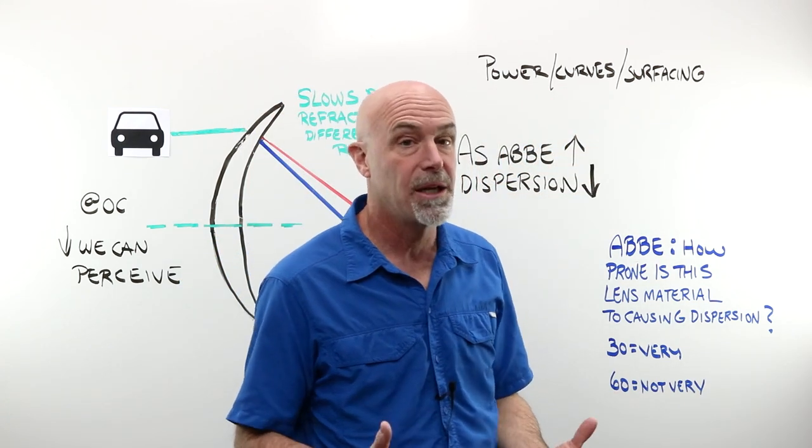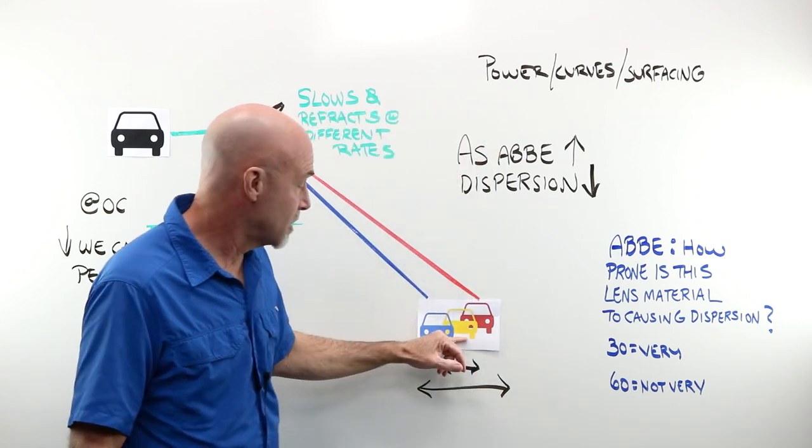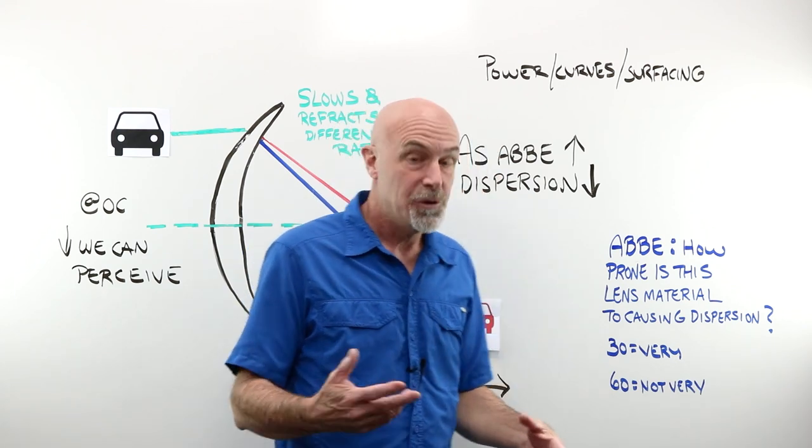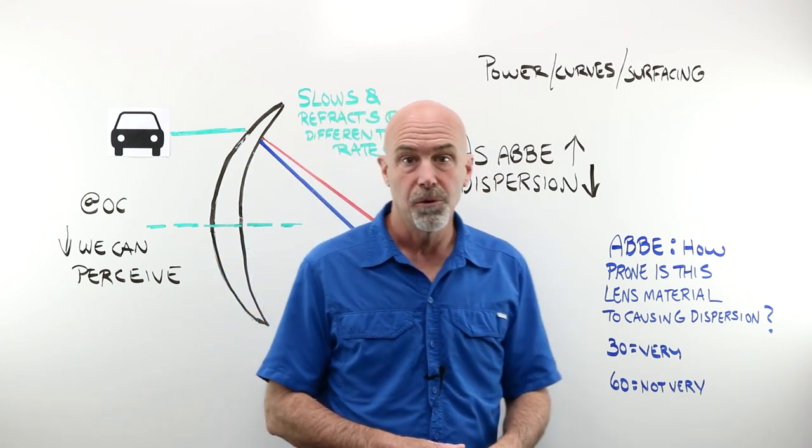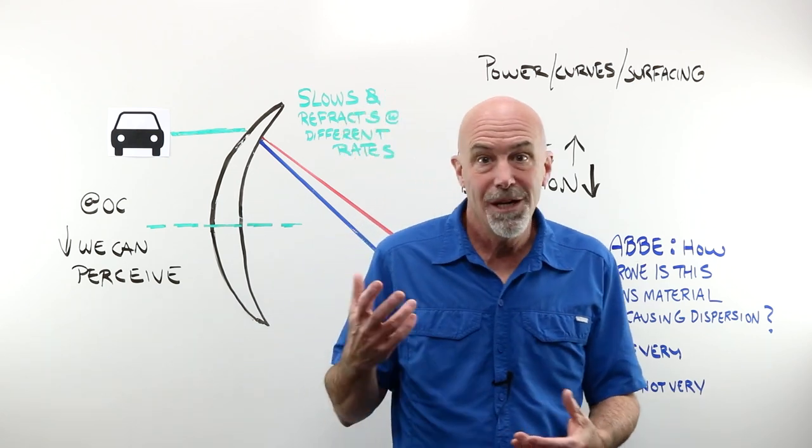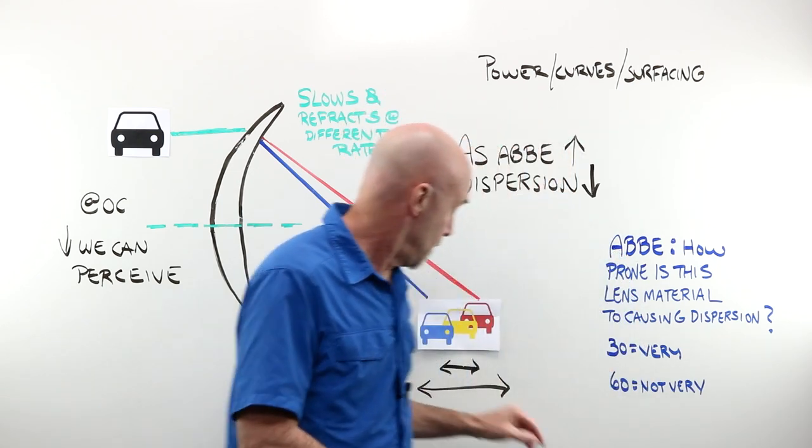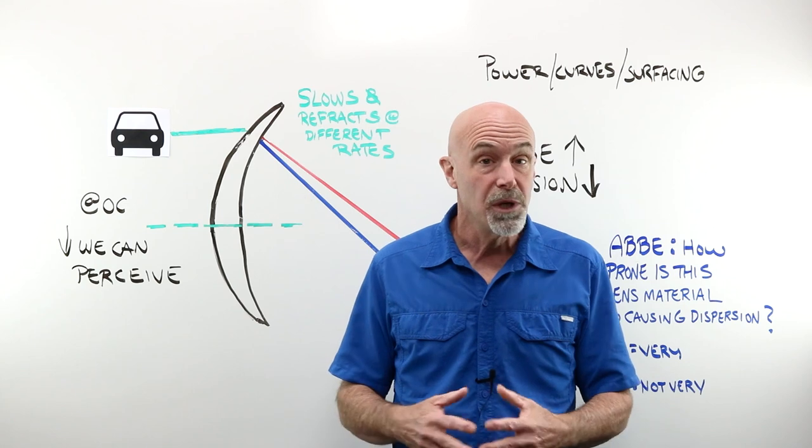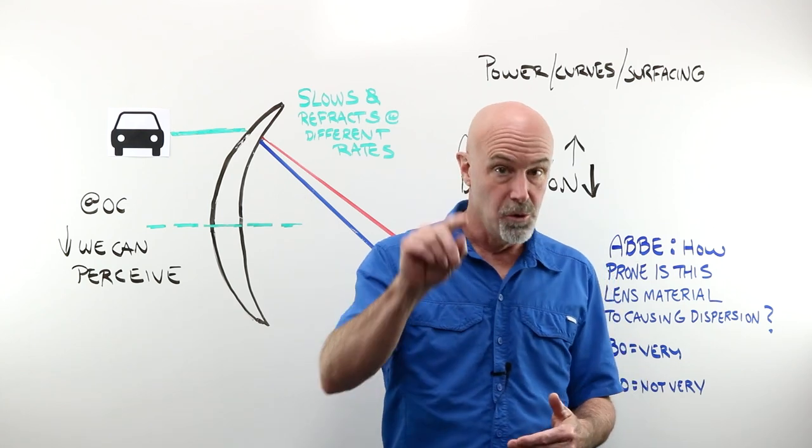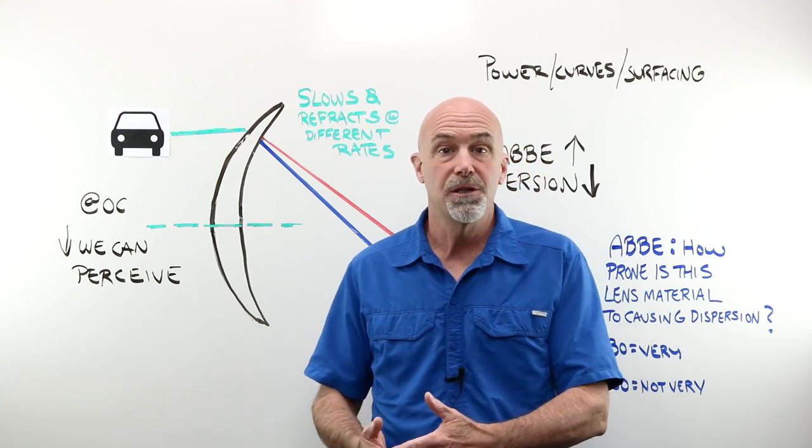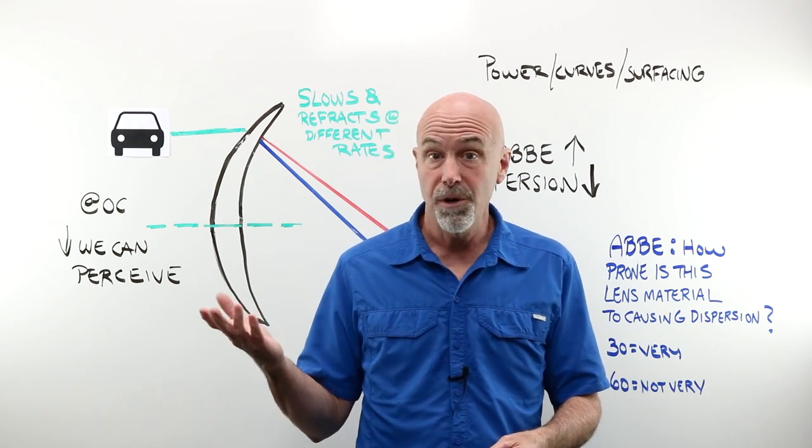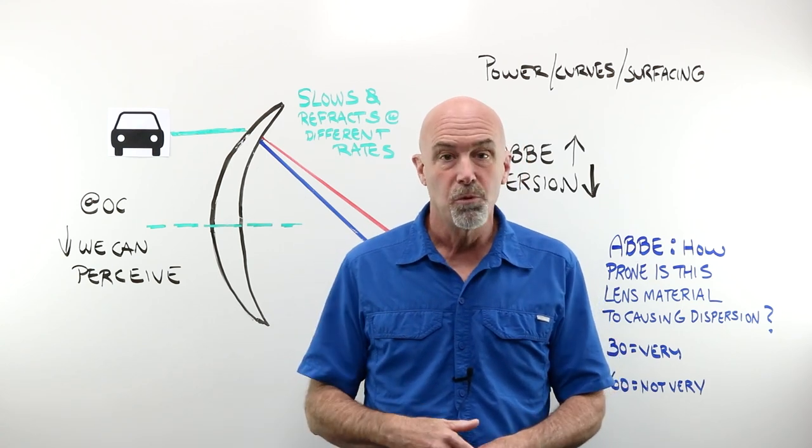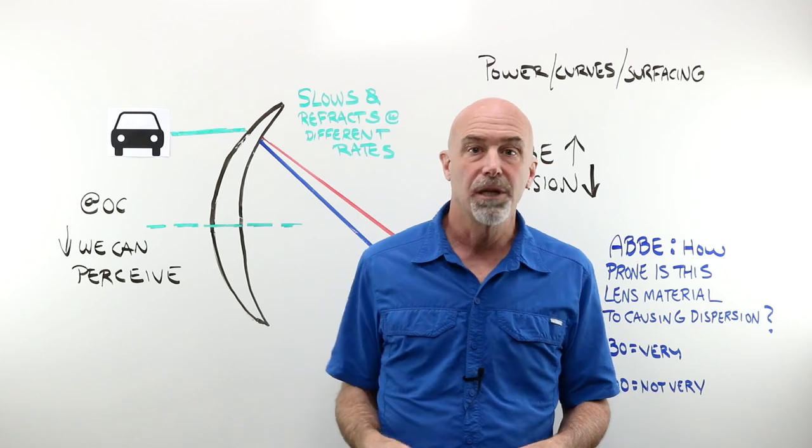Using a great lab like Laramy-K can actually help reduce and control this. Obviously, where appropriate, use a lens with the higher Abbe value. Not everybody is sensitive to this. Some people pick this up in a heartbeat, where others will never notice it. The rest really comes down to you, just having those good solid optician skills. Frame size and really good accurate measurements as that power increases.